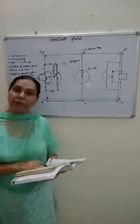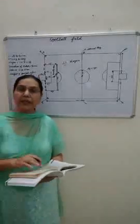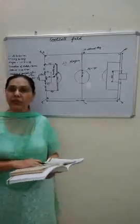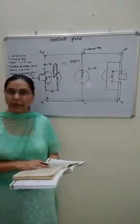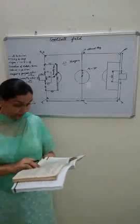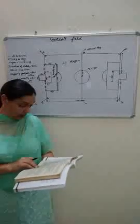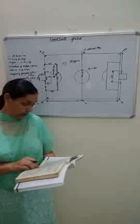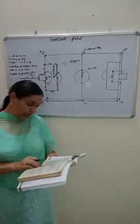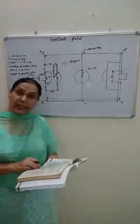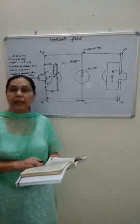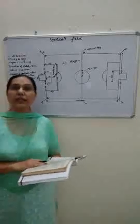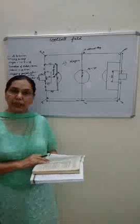After the 30 minutes of extra time, if the result is still equal, 5 penalty kicks will be given to each team. If goals are still the same, alternative penalty kicks will be given to both teams under the sudden death rule.